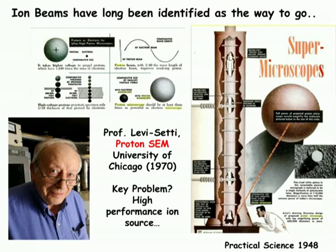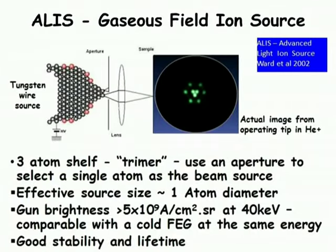This has been known for a long time. Back in 1948, people were discussing a proton microscope in Practical Science magazine as the way to get really high resolution images. Another 20 years on, Professor Levisetti at the University of Chicago actually built a proton microscope and demonstrated superior performance compared to the electron case. But it took another 20-plus years before the people at Zeiss developed the gaseous-filled ion source — the ALIS gaseous-filled ion source — which is a very elegant piece of technology.